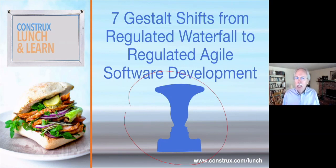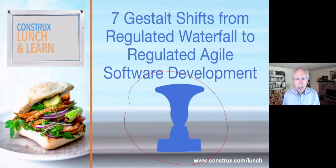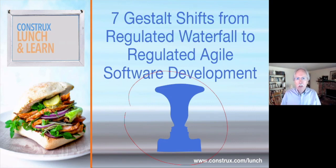We're not going to pick on any particular regulations — there are lots of kinds of regulated software out there. So I'm going to be talking in a very general sense about regulation. There are potentially regulations that say you must do this particular thing, and I'm not arguing that you don't do that. We're just saying: in general, can we start seeing how we could be more agile on regulated projects when the world seems to be telling us waterfall?